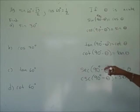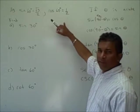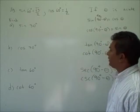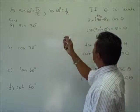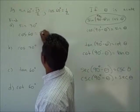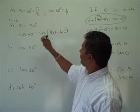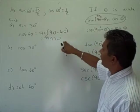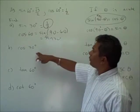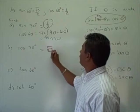Now let's use our co-function identities to evaluate some trig functions. We're given that sine of 60° equals the square root of 3 over 2, and cosine of 60° equals 1 half. We need to find sine of 30° and cosine of 30°. Using our co-function identity, cosine of 60° equals sine of (90° − 60°) equals sine of 30°. So sine of 30° equals 1 half. Similarly, cosine of 30° equals sine of 60°, so cosine of 30° equals the square root of 3 over 2.